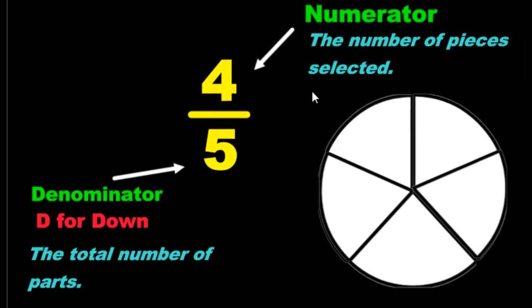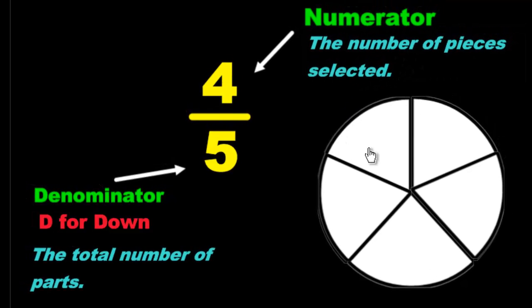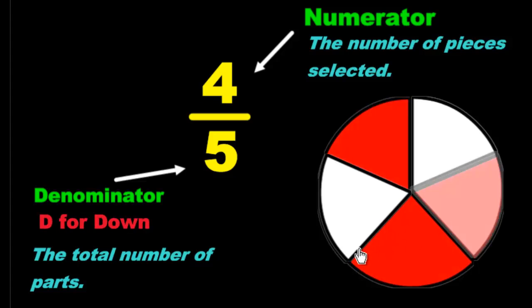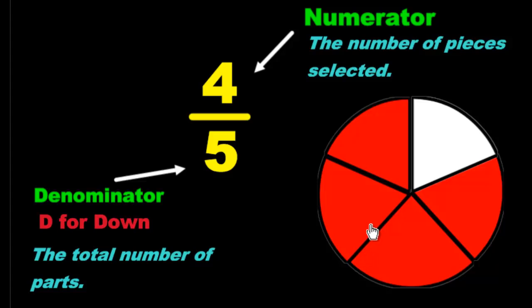So the number of pieces that are selected. I have to select 4. It doesn't really matter which 4 as long as I choose 4. This is 4 out of 5. This fraction picture is 4 out of 5 pieces.